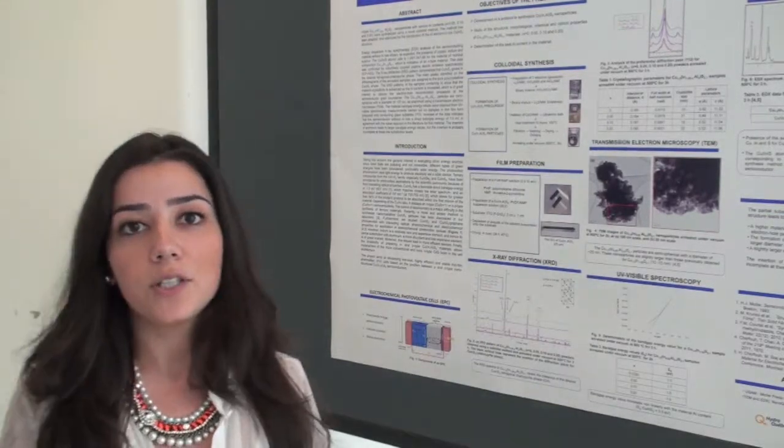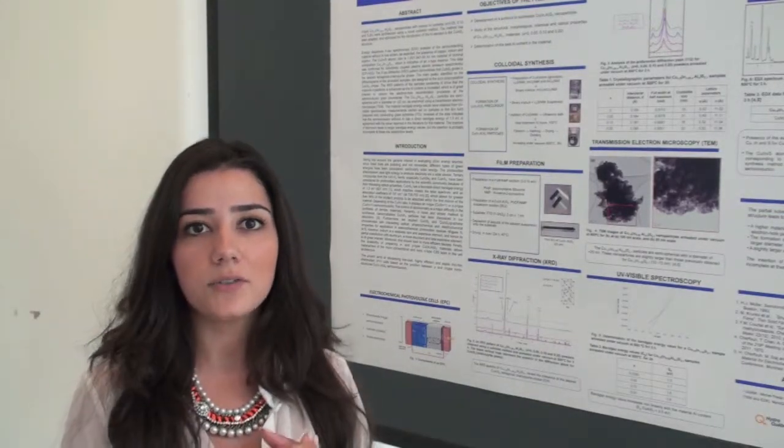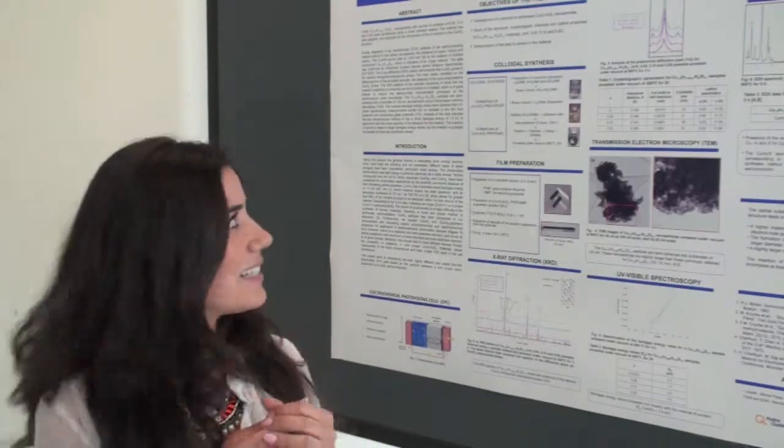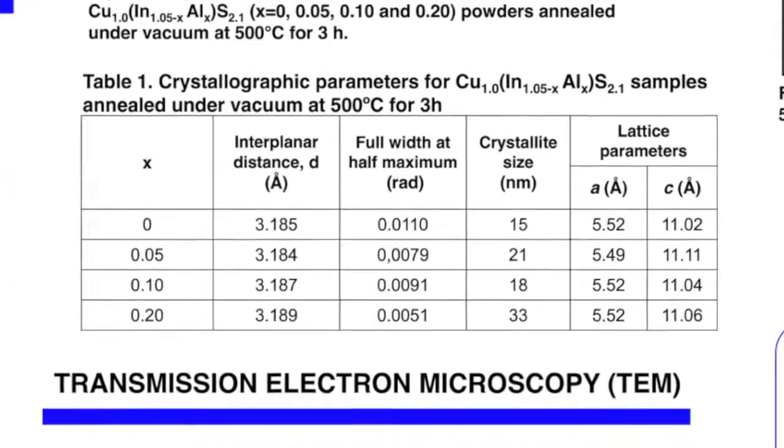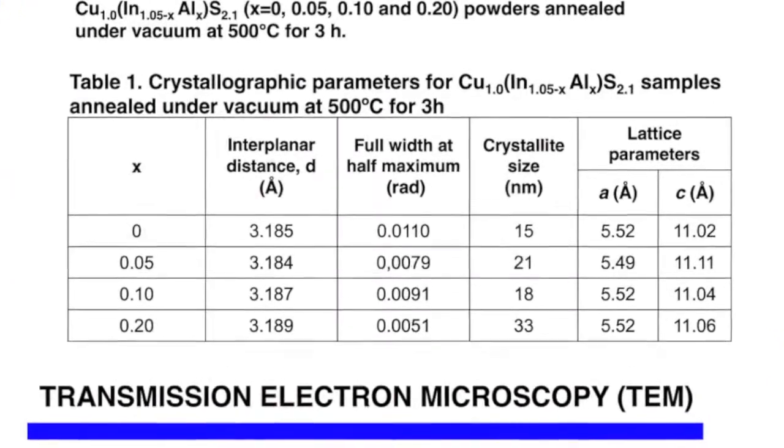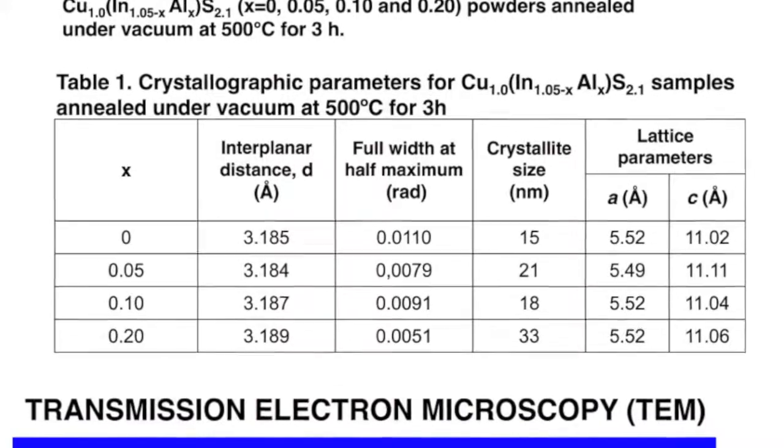But we want to do it at different compositions so we can study the different compositions. For example here we have 0%, 5%, 10% and 20% and we want to determine the best aluminum content for the material.